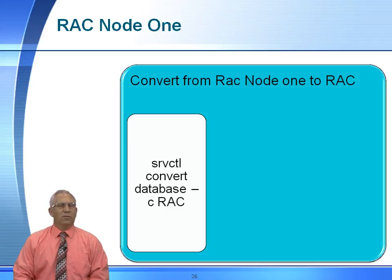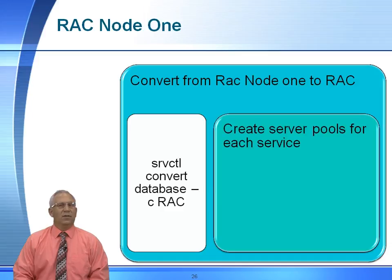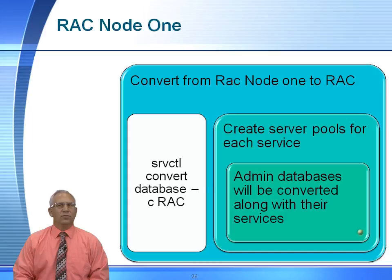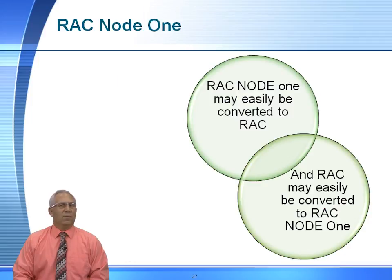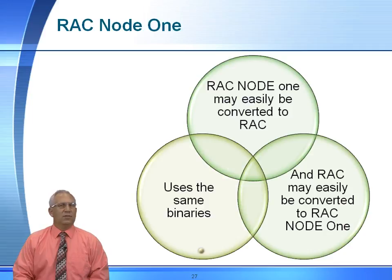If we want to convert from a RAC Node 1 database to an additional RAC database, we will use the server control utility — basically `srvctl convert database -c` followed by the database name. It will create server pools for each instance, and the admin services will be converted along with all other services. You use server control to convert a RAC Node 1 database to a traditional RAC database, and a RAC may be easily converted to RAC 1 Node using the same binaries with the server control utility as well.